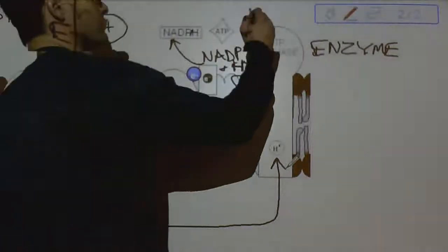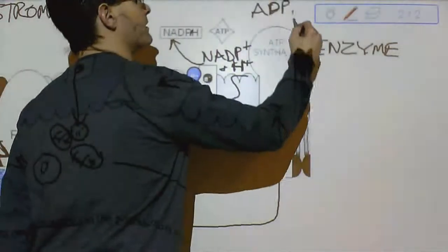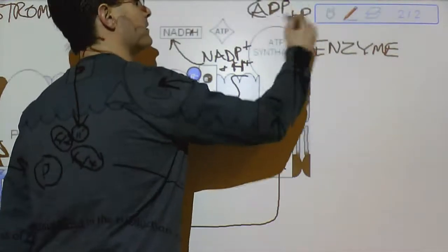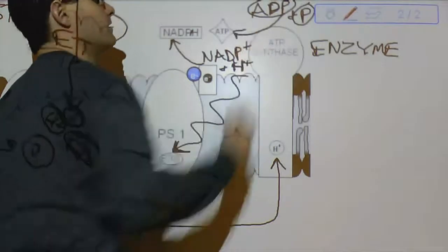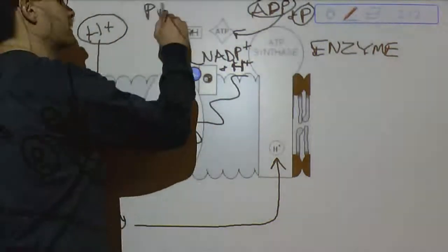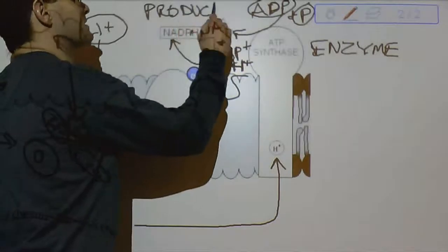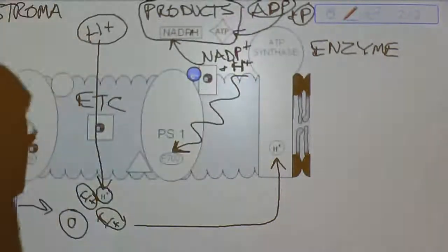Those hydrogens are going to go through ATP synthase to create ATP from ADP and a phosphate. So ADP and a phosphate will come in. ATP will be the result. These are the products of the light reactions that will power the dark reactions to make glucose.